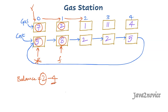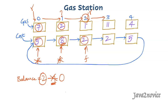Any time we see a negative balance, we update our pointers and start the journey fresh from the new index — both pointers move forward and balance resets to 0. We skip starting from index 1 because it is already proved that gas is not enough to travel from index 1 to index 2, saving iterations. Now from index 2 to index 3 we need 2 units but only have 1 unit and no balance, so balance is minus 1. Again negative — we restart fresh.